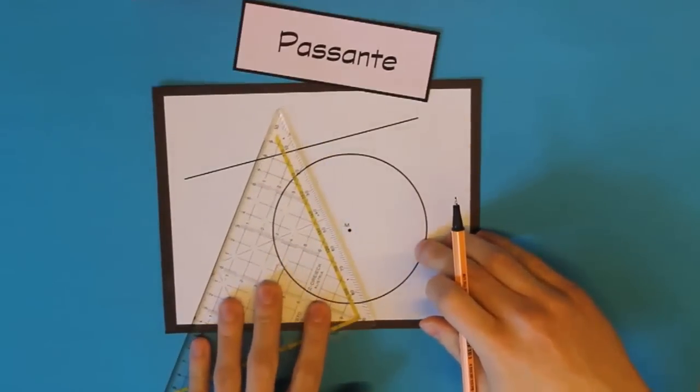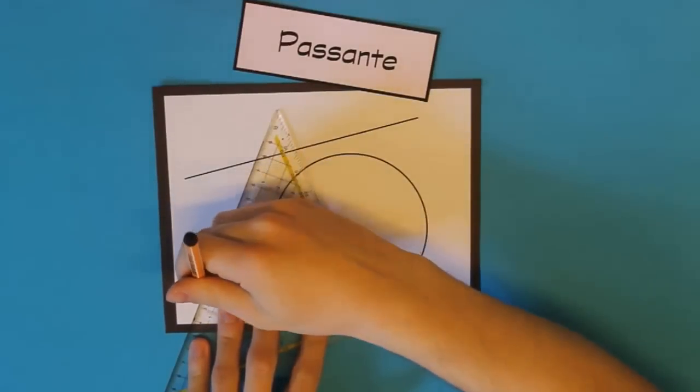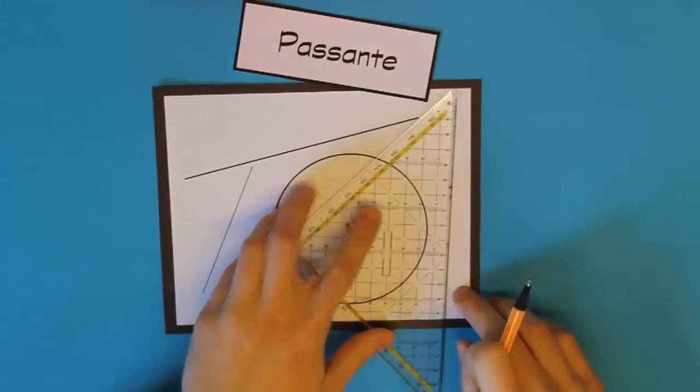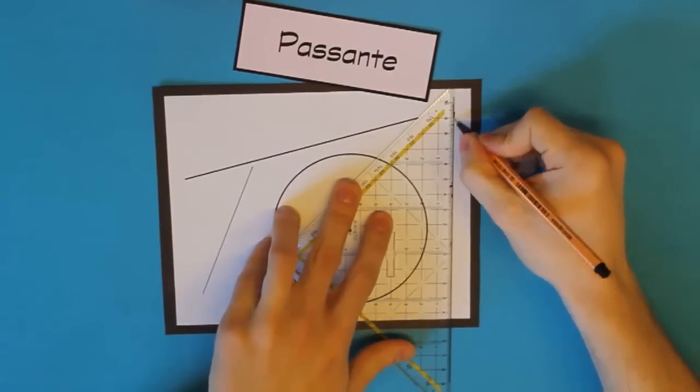Ich zeichne jetzt einfach noch schnell zwei weitere Passanten ein. Dazu nehme ich einfach dieses Lineal und zeichne zwei Geraden, die den Kreis nicht schneiden. Also es ist nicht schwer, einfach daran vorbeizeichnen.